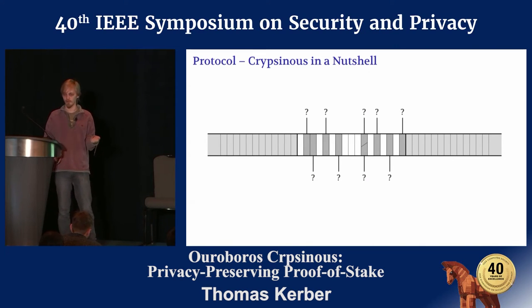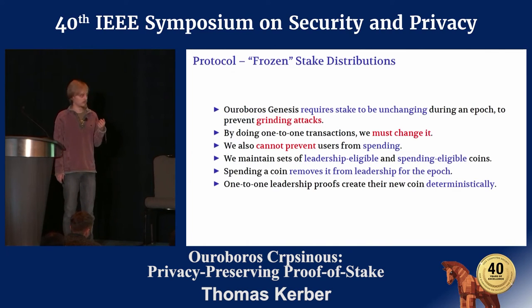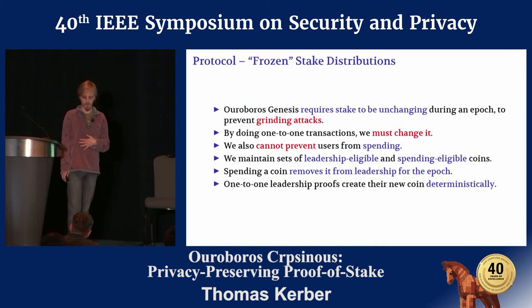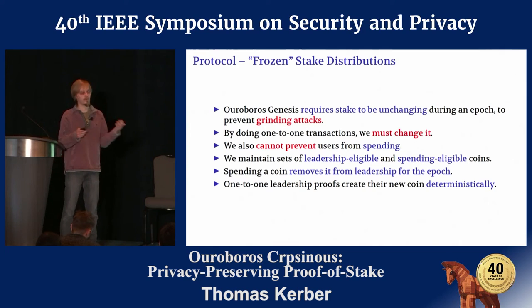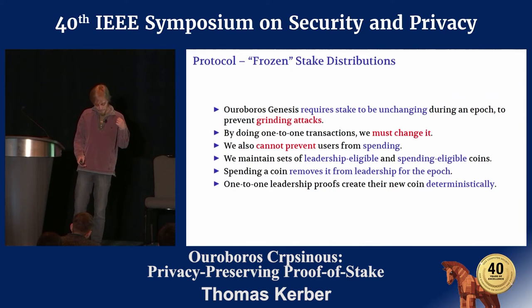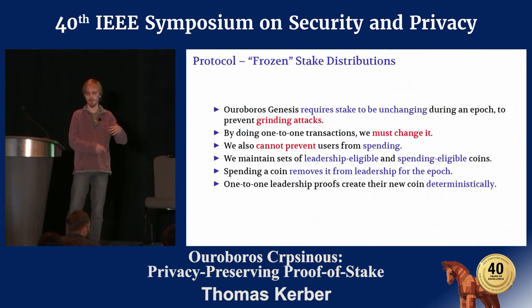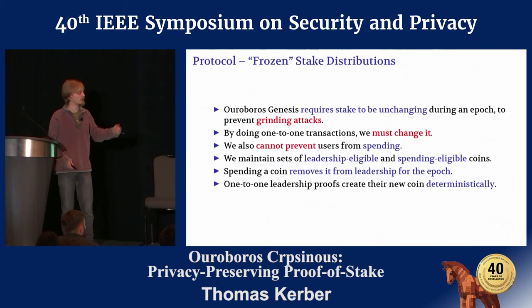One of the first problems we encountered is that in Ouroboros Genesis an assumption is made that the stake distribution during the course of an epoch has to remain frozen. You take a snapshot at the start and keep using that for the remainder of the epoch — this is primarily to prevent grinding attacks, where you re-roll your secret keys until you get one that wins in the election process. This introduces problems because with the one-to-one Zerocash transactions as part of our leadership proofs, we need to change the coins available. Furthermore, we can't prevent users from spending, and once a user spends a coin they reveal their serial number, which would link it to a corresponding leadership proof.